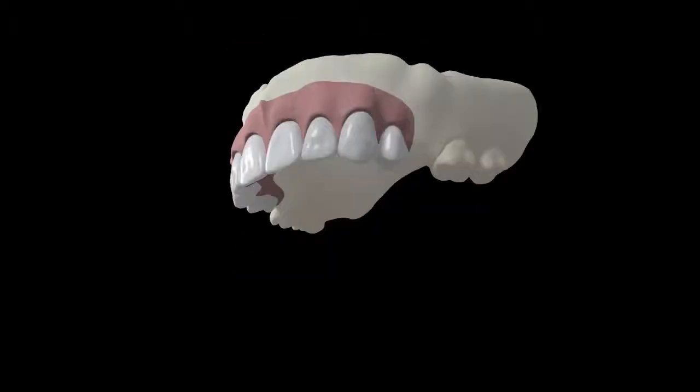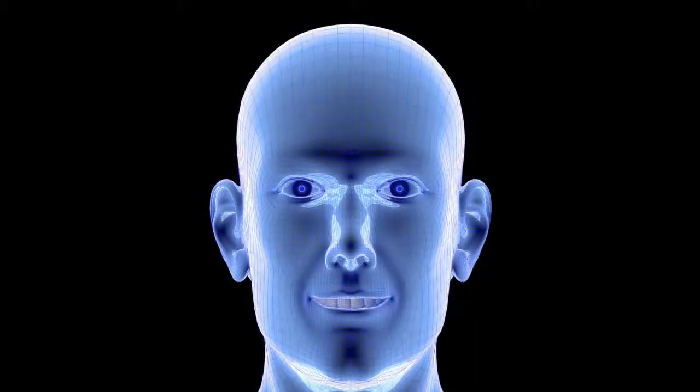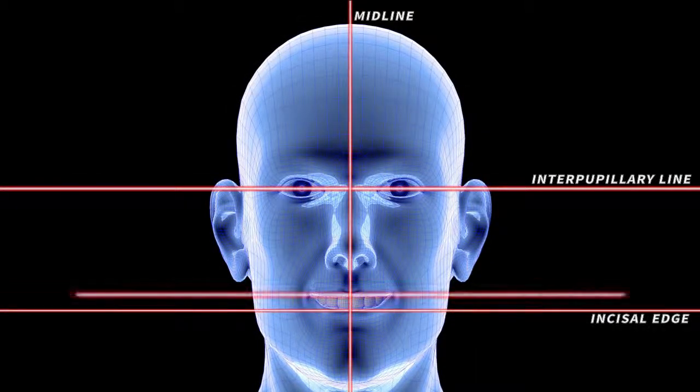Adjusting the position of the teeth on the guides is very easy. The wax is softened and in the maxillary arch, the teeth are adjusted to the proper lip support, midline, incisal edge, gingival margin, and individual aesthetic arrangements.